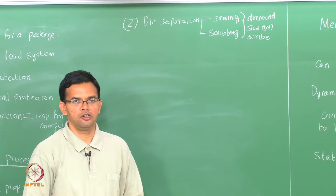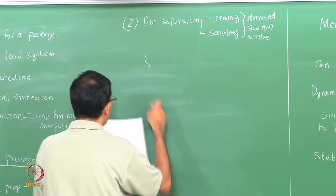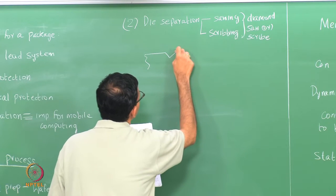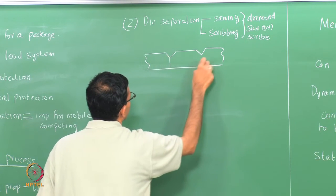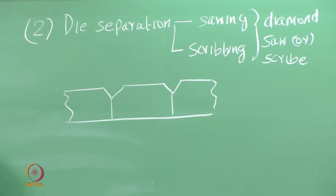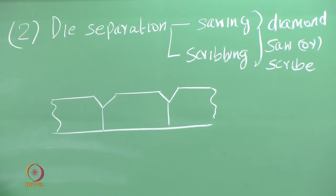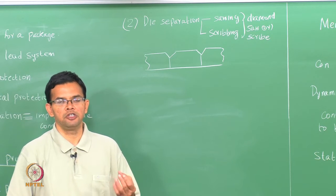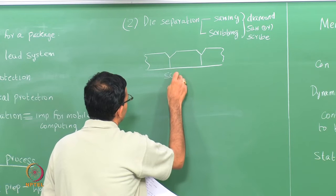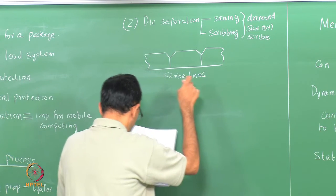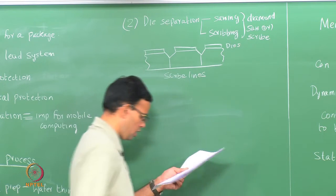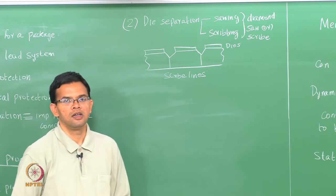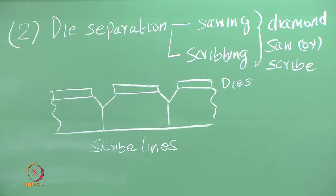The diamond saw or scribe is used to separate the wafers. This represents your wafer schematically. We have seen the concept of scribe lines earlier: scribe lines basically separate the different components of the die. Sometimes the scribe lines are blank but they usually have some circuits for electrical testing. These are your scribe lines and the dies are fabricated on top. The wafers are separated along the scribe lines by using a diamond saw or diamond scribe so that you get the individual dies out. This is the die separation process.